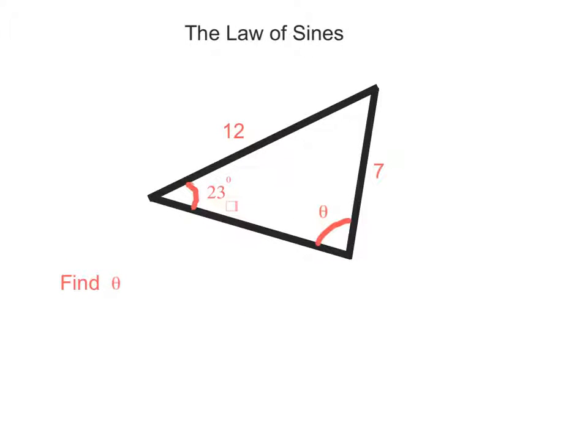Law of sines here again, find theta this time. We know that 7 over sine 23 equals 12 over sine theta. If we turn both of these fractions upside down, it helps us actually isolate sine theta.